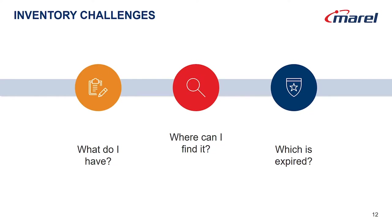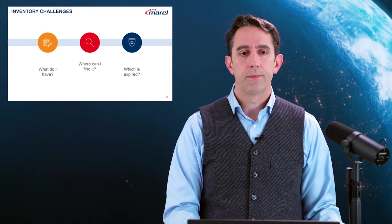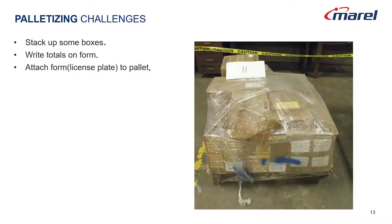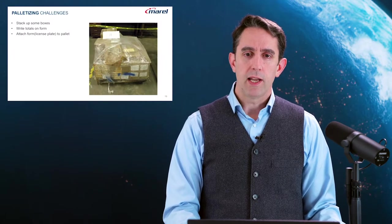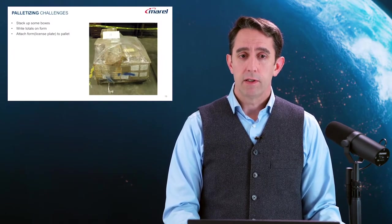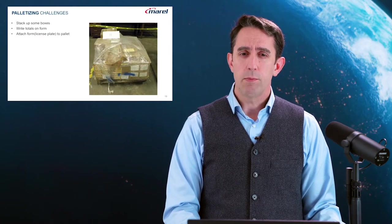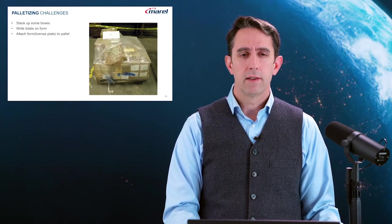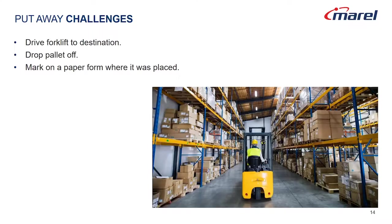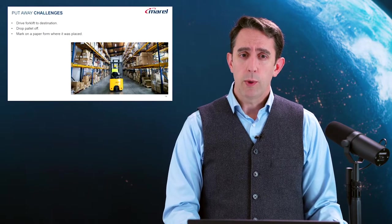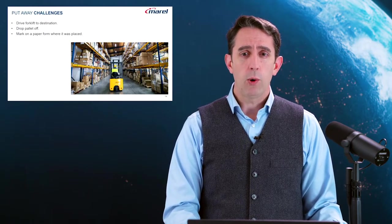What are some of the challenges of this traditional approach? Let's take a look at palletizing. We do have a few points of failure here. What if there's a typo in the license plate or the license plate falls off? Can we still maintain visibility over what we have? What if we make a mistake in the transcription or the assigned location? Can we quickly identify where the problem is and know how to resolve it?